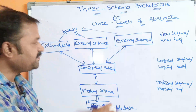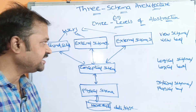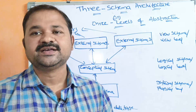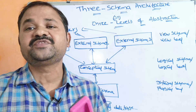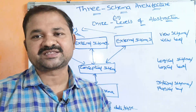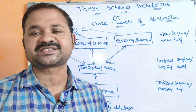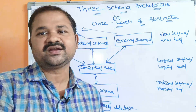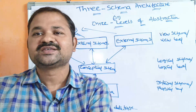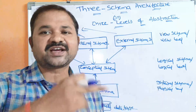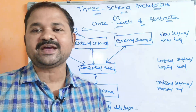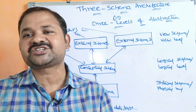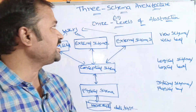In between the users and the database we have three schemas: external schema, conceptual schema, and physical schema. Schema mainly describes the structure of the database. For example, in a student database the structure includes roll number, name, and marks. Similarly, in an employee database it includes employee number, employee name, and so on. Defining the structure of the database is called a schema.